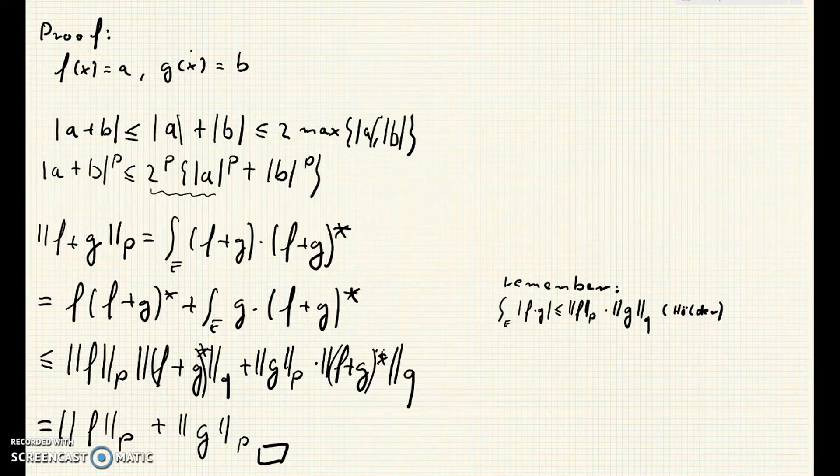Let's look at an element x in E and let's call f of x equals a and g of x equals b. Then a and b are real numbers and we have the triangle inequality for real numbers, which is that the absolute value of a plus b is less than or equal to the absolute value of a plus the absolute value of b, which is of course smaller than two times the maximum of those two absolute values.